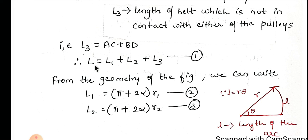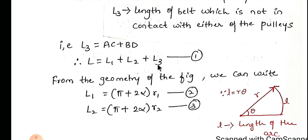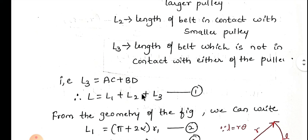Now we need to find out the total length of the belt for the cross belt drive. To find the total length you need to add all the lengths: L1, the length of belt in contact with the larger pulley, plus L2, the length of belt in contact with the smaller pulley, plus L3, the length of belt not in contact with either pulley, that is AC plus BD. First we find L1 and L2, then L3.